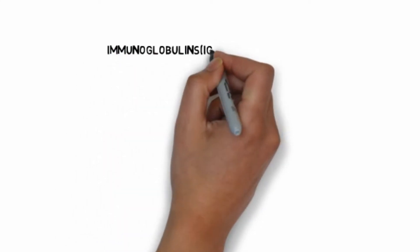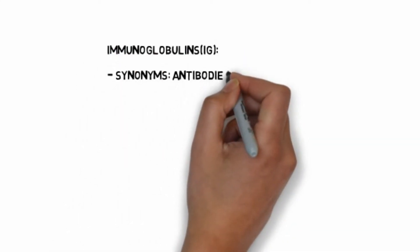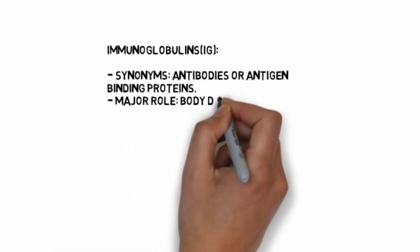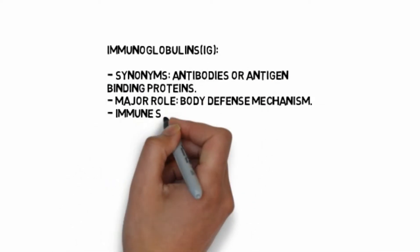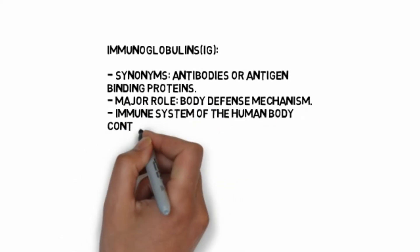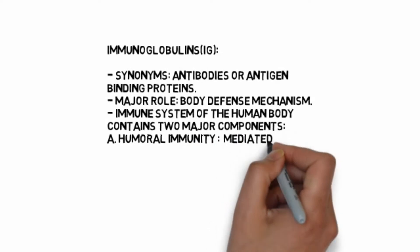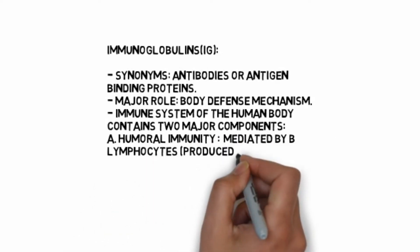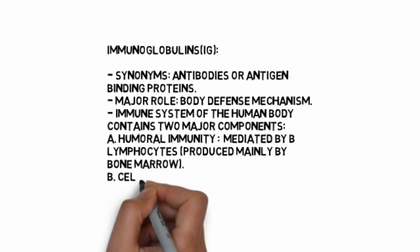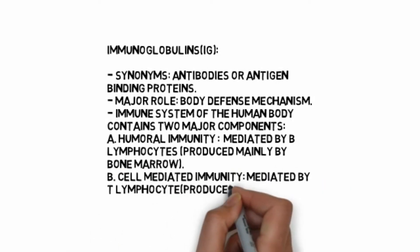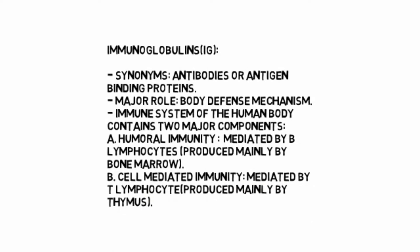Immunoglobulins, denoted by Ig, are synonymous with antibodies or antigen-binding proteins and play a major role in body defense mechanism. The immune system of the human body contains two major components: humoral immunity mediated by B lymphocytes produced mainly by bone marrow, and cell-mediated immunity mediated by T lymphocytes produced mainly by thymus.